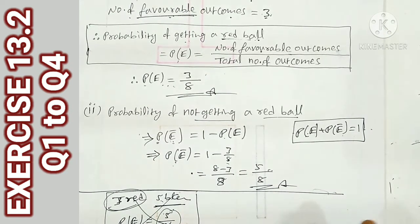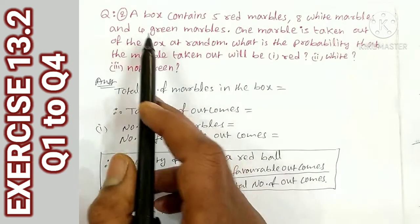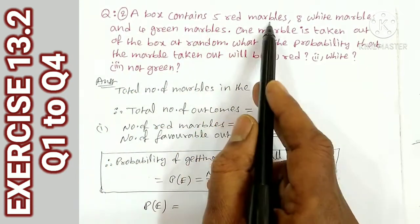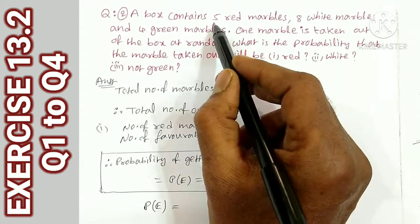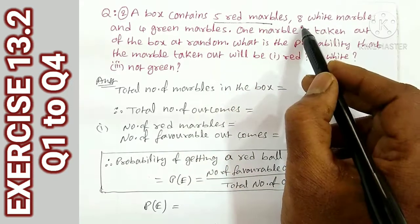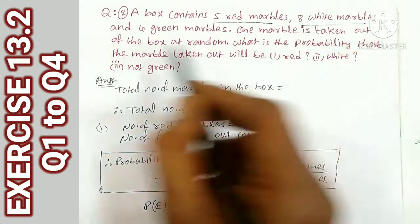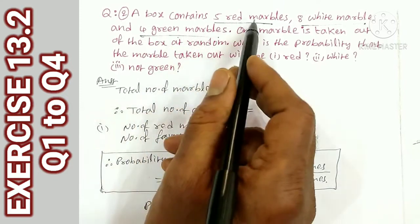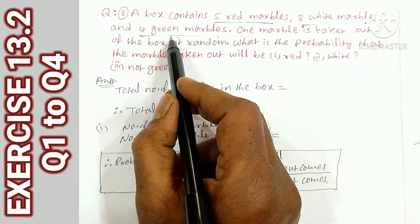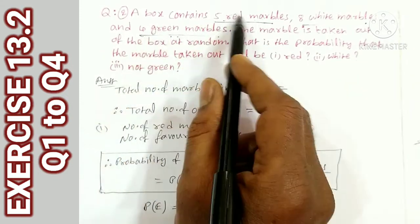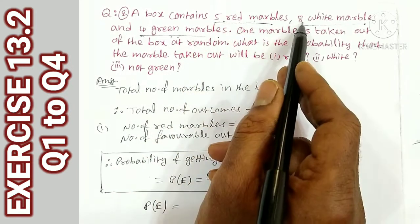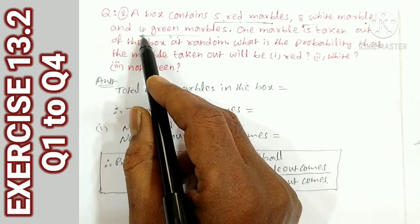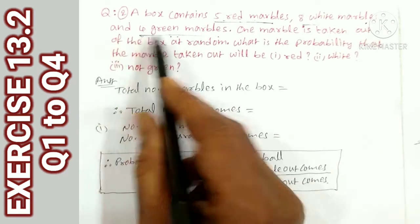This is the first question. The second question is: a box contains 5 red marbles, 8 white marbles, and 4 green marbles. There are 3 colors: red, white, and green — 5, 8, and 4 respectively. The total is 5 plus 8 is 13, plus 4 is 17. So the total number of outcomes is 17.